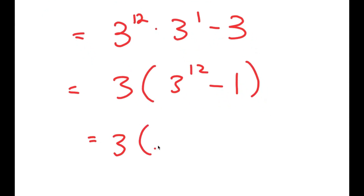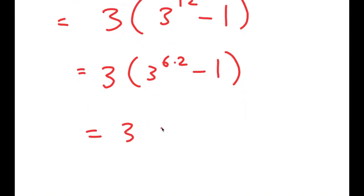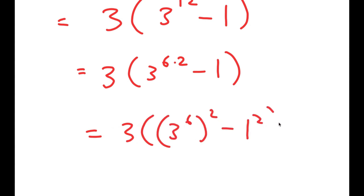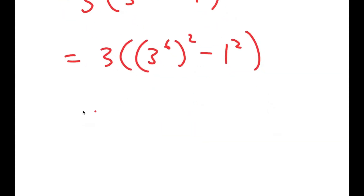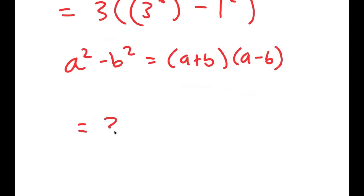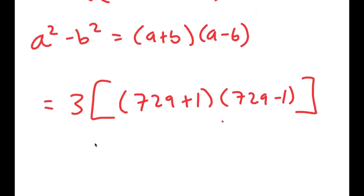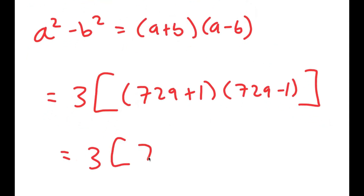3 to the power of 12 I'm going to rewrite as 3 to the power of 6 times 2, which equals 3 times 3 to the power of 6 squared minus 1 squared. I'm writing this like this because now I can use the property a squared minus b squared is equal to a plus b times a minus b. So this turns into 3 times 729 plus 1 times 729 minus 1, which is equal to 730 times 728.